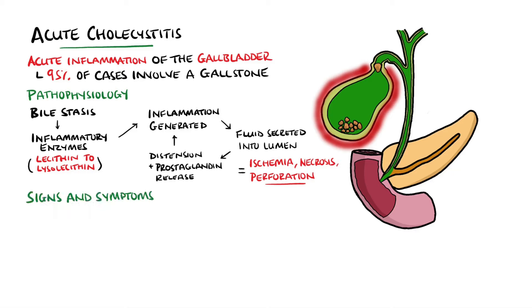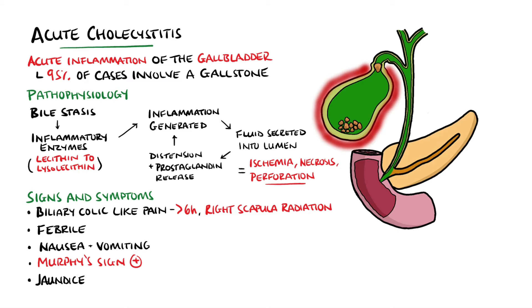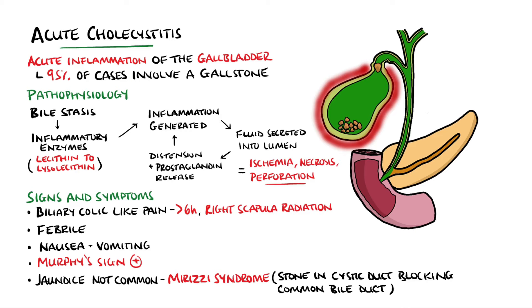The signs and symptoms of acute cholecystitis include a pain similar to biliary colic - in fact, patients have often previously had biliary colic - however the pain tends to last over 6 hours and may radiate towards the right scapula. Other findings include fever, nausea and vomiting, and Murphy's sign, where palpation of the right upper quadrant as the patient takes a deep breath causes pain and a halting of inspiration. Jaundice is not commonly seen in acute cholecystitis because there is not usually an obstruction of the common bile duct. The exception is Mirizzi syndrome, where a stone in the gallbladder or cystic duct causes external compression of the common bile duct.